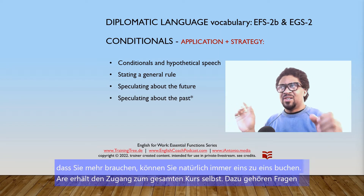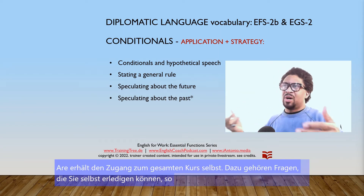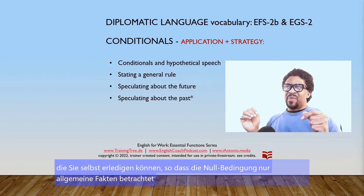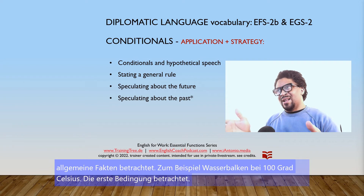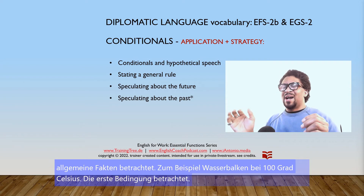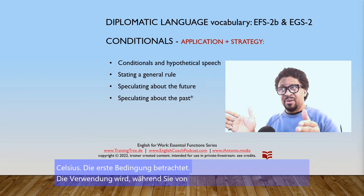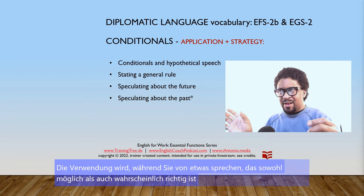The zero conditional just looks at general facts — for example, water boils at 100 degrees Celsius. The first conditional looks at the use of will, where you speak of something that is both possible and probable. That's pretty clear, so you use the word will.